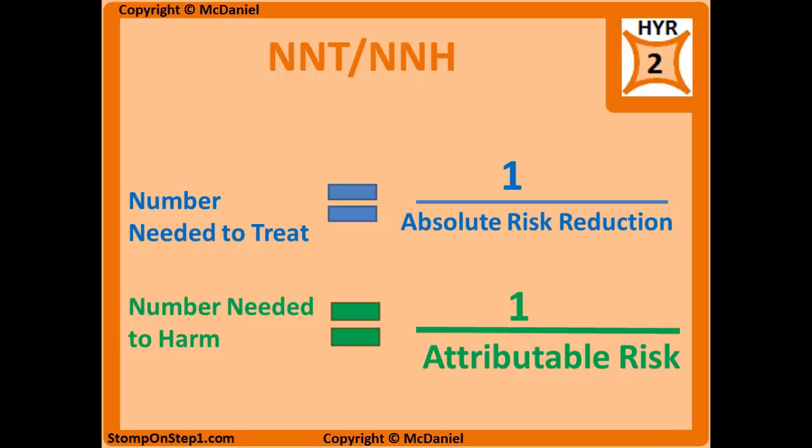Now that we understand those definitions, we can talk about number needed to treat and number needed to harm. Again, these two terms are almost the same thing — they're calculated the same way, they just are used in slightly different situations. The number needed to treat is how many people you need to give a particular treatment in order to have a positive effect on one person or prevent one certain outcome. The number needed to harm is the number of people that need to be exposed to a risk factor to affect one person. You could also use number needed to harm to measure a side effect in a specific treatment. You calculate both by taking one divided by either the ARR or the AR, whichever is more appropriate.